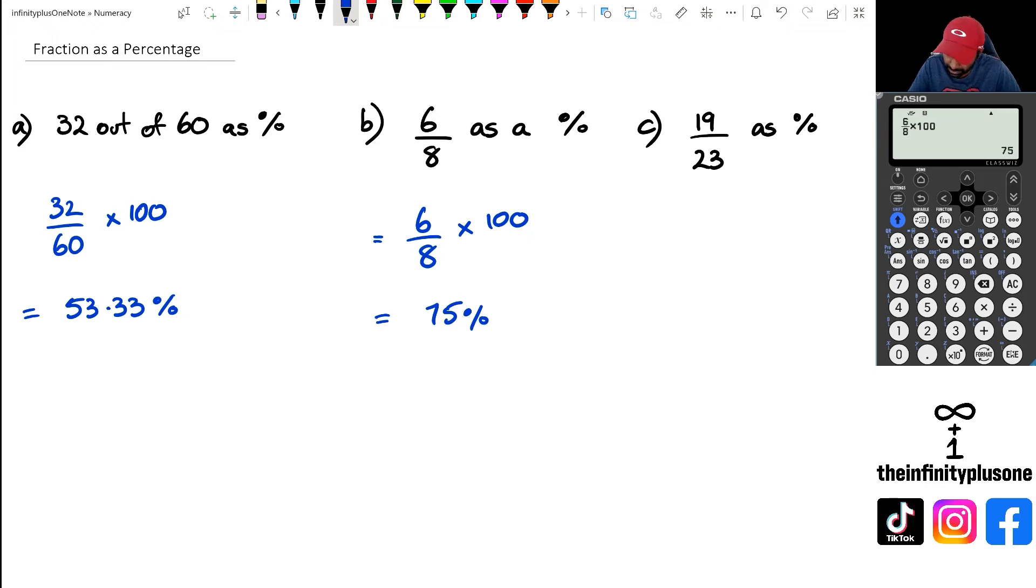So let's have a look at 19 over 23 as a percentage. What we're going to do is 19 over 23 multiplied by 100. Now with that in mind, we've got 19 over 23 times 100. Now we just got to use the calculator for this.